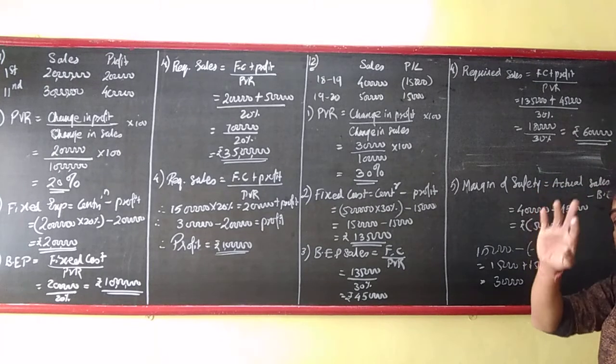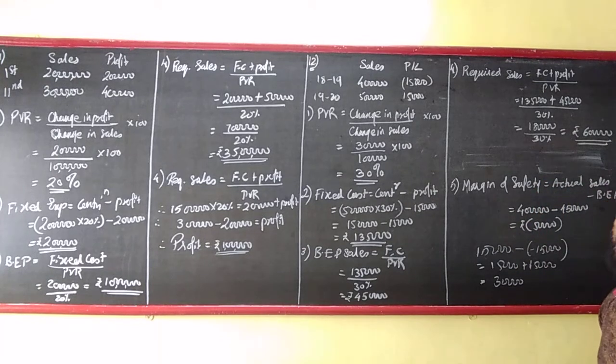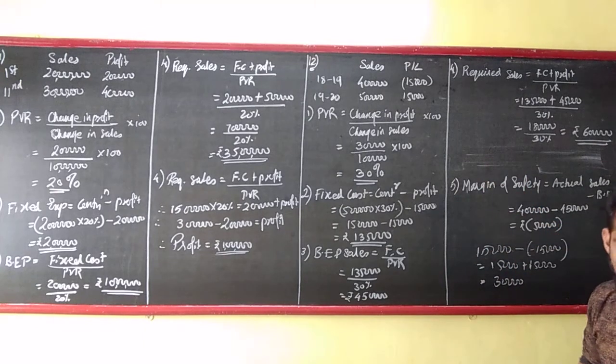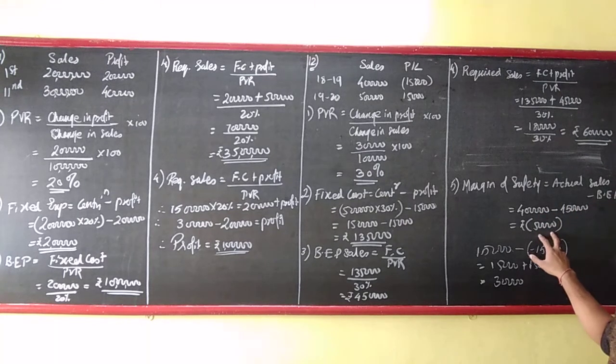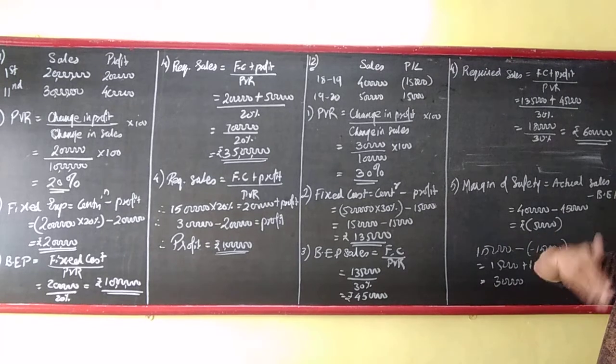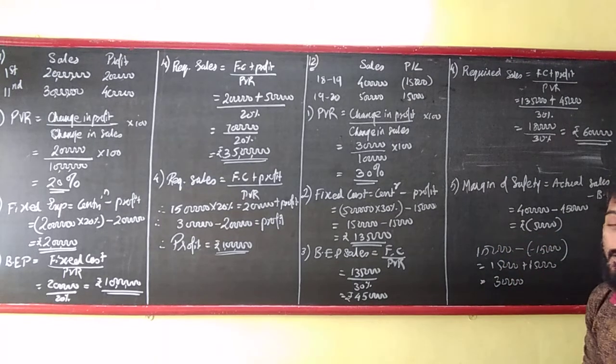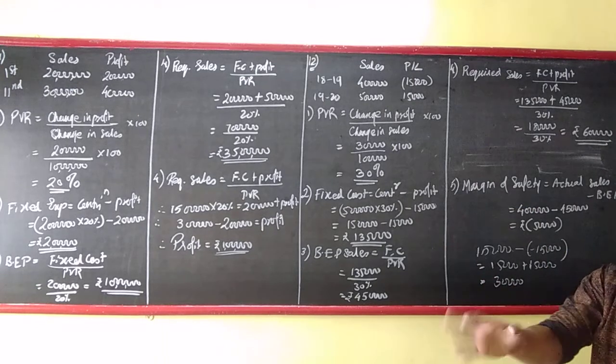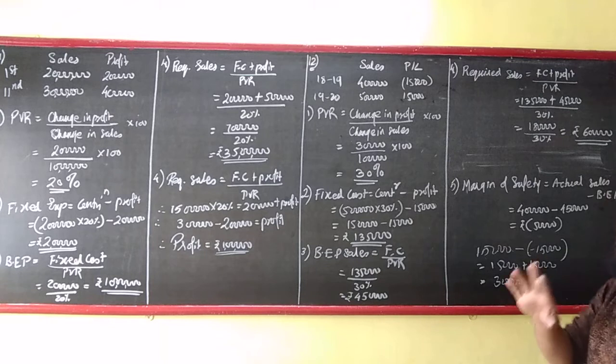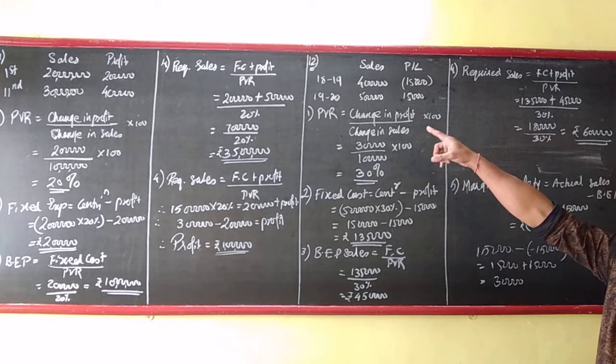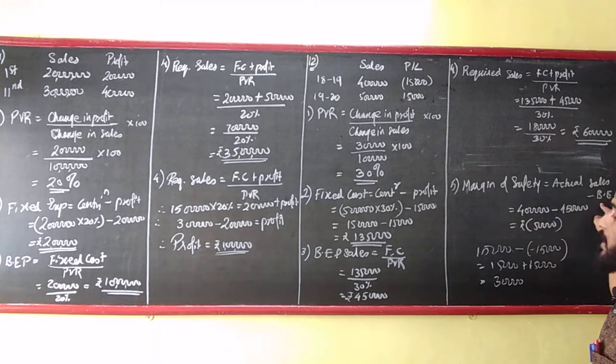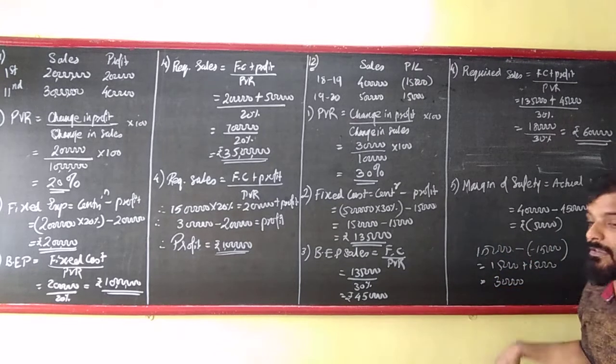And we have to calculate margin of safety. You should be aware that the question is asking for 18-19. So margin of safety is actual sales minus BEP, which means 5 lakhs minus 4 lakh 50,000, so 50,000. That's why I am writing minus. If it was for 19-20, sales 5 lakhs minus BEP sales 4 lakh 50, that would be positive 50,000.